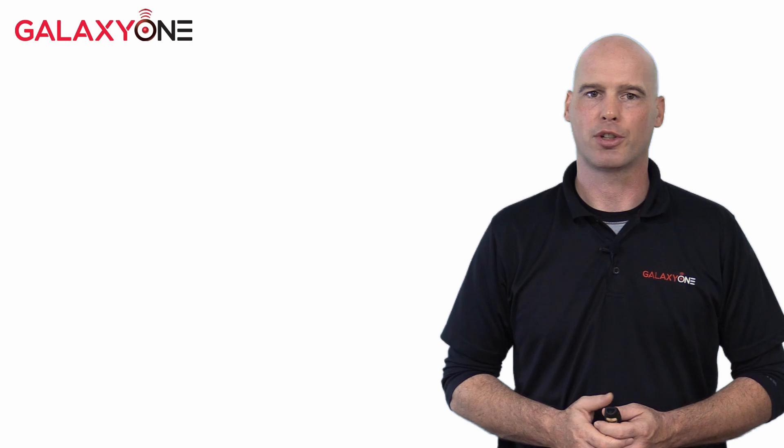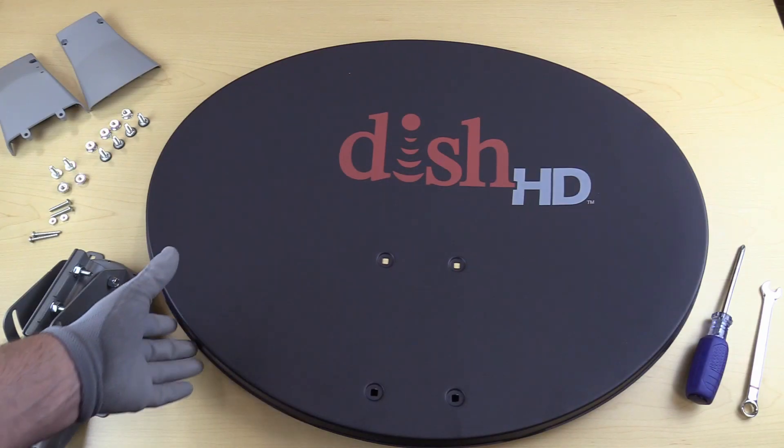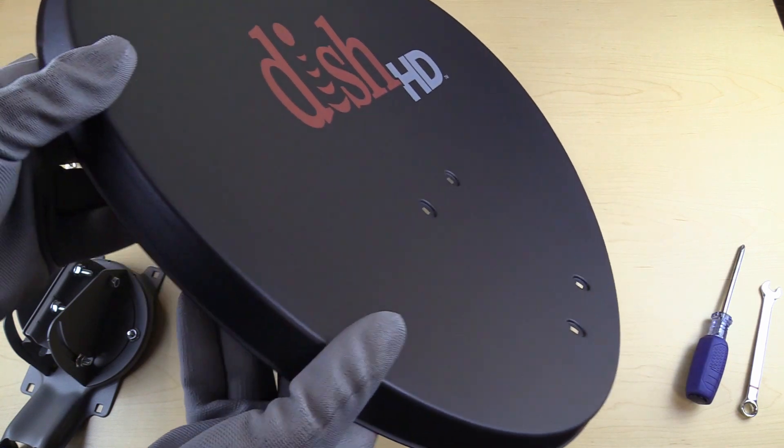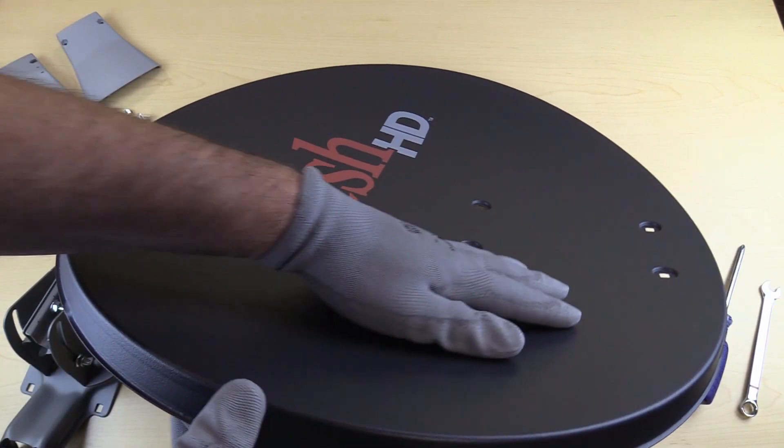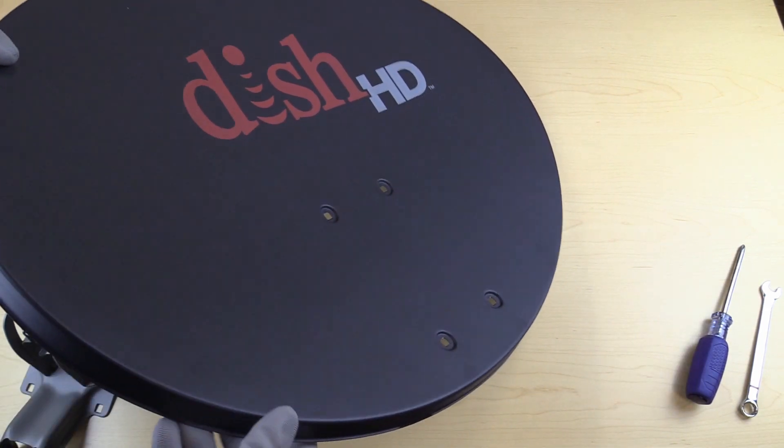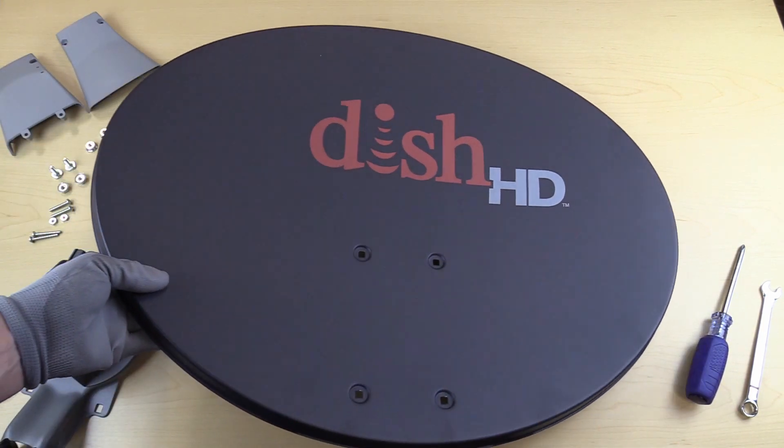Before assembling the antenna, make sure to have a good look at the reflector to make sure it doesn't have any obvious bins or dents. Bins or dents in the antenna's reflector can cause unwanted signal issues on one or all of the needed satellites. If you find any bins or dents, do not use the reflector.